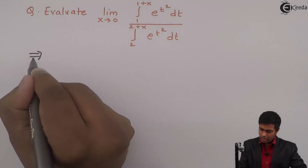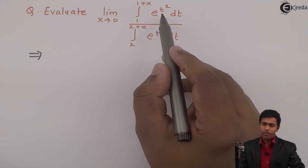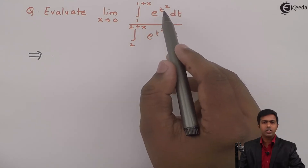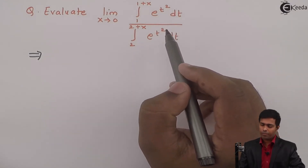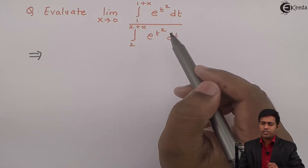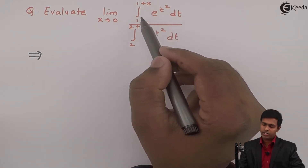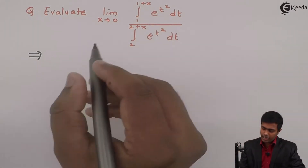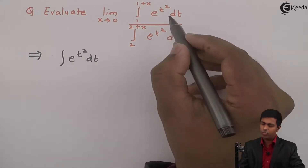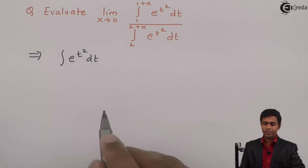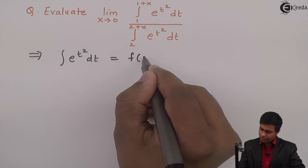If you observe the numerator and denominator, we have the same function in numerator as well as in denominator, and there is a difference between the upper and lower limits of both integrations. We have integration of e^(t²) dt in numerator as well as denominator, and for the time being I will consider this as a function of t.